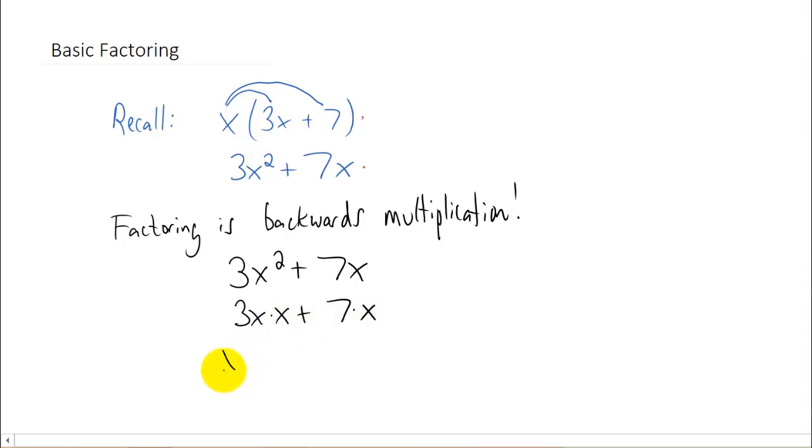Now that you know there's a factor of x in each one of these terms, you can do what we call pulling that factor out of each term. We pull this x and this x out of the parenthesis right there. And what we're left with inside of the parenthesis is this 3x and this plus 7.